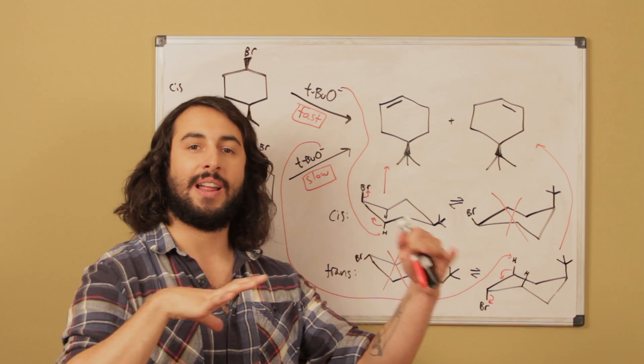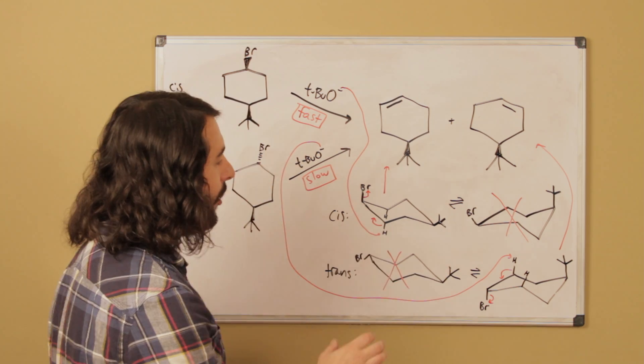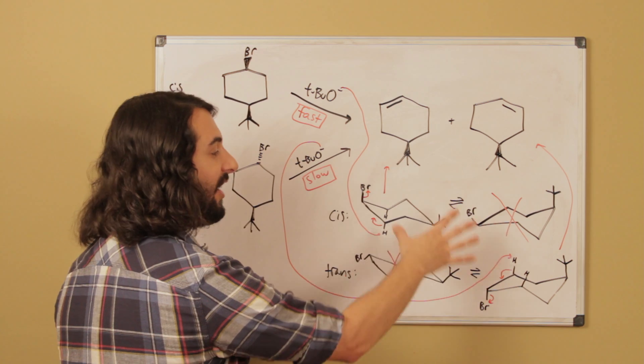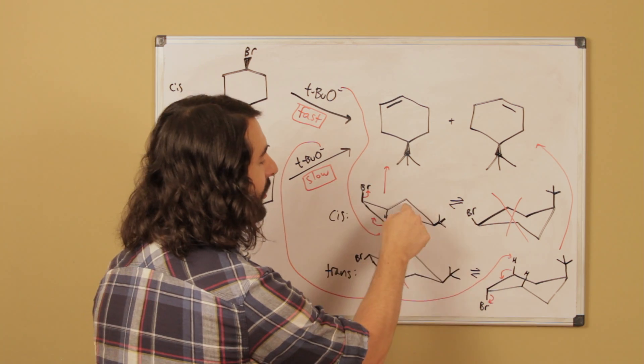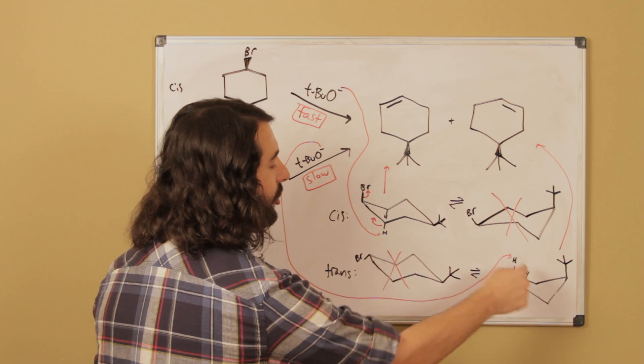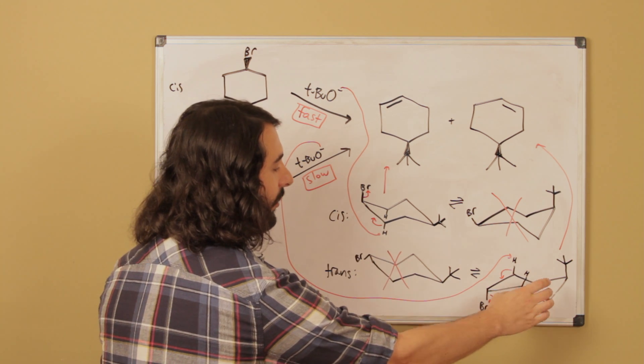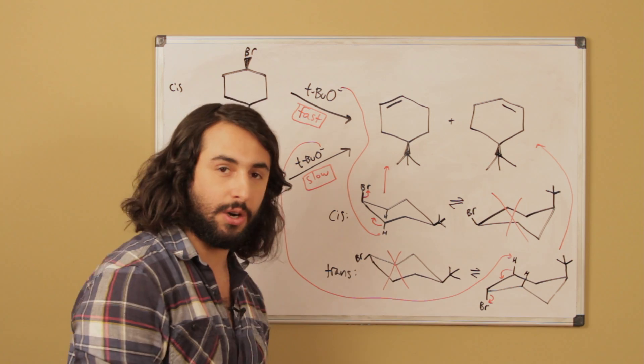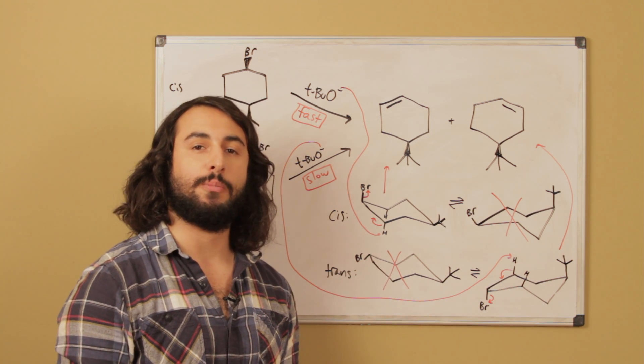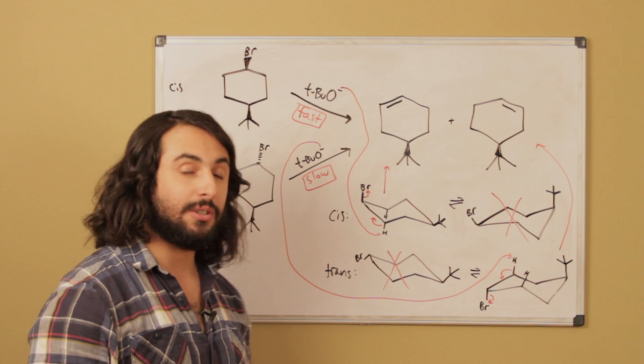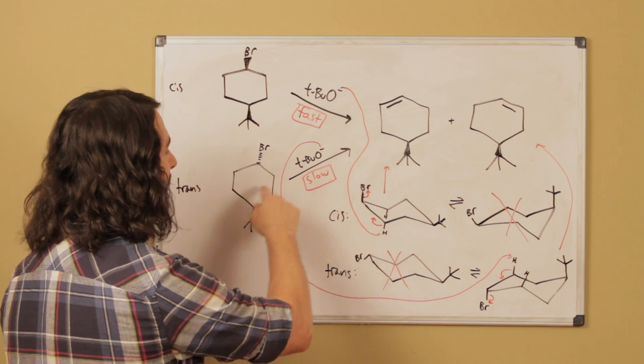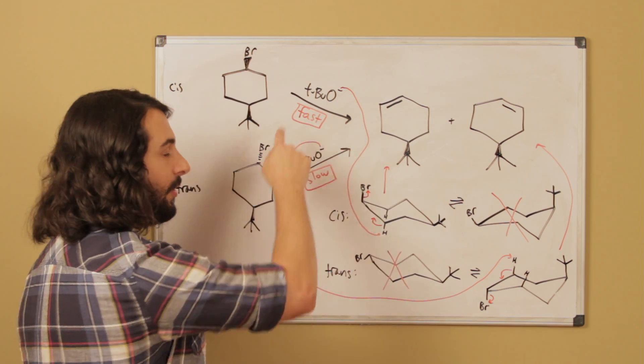So both of these can do E2, they will do so from specifically these chair conformations. But because for the trans isomer the chair from which E2 can occur is so much more unfavorable energetically, the end result on the macroscopic scale is that this reaction is much, much, much slower than that one.